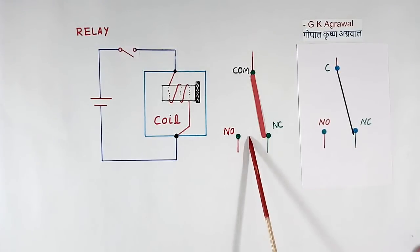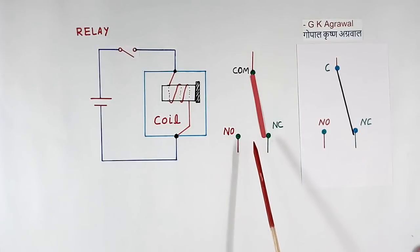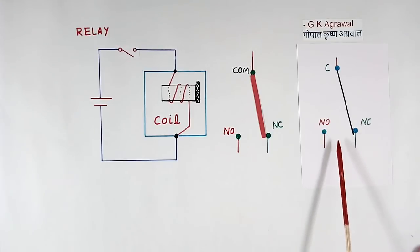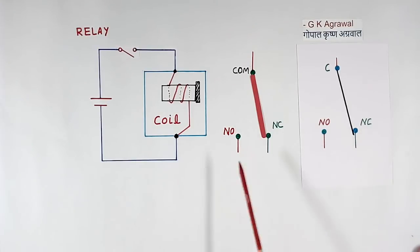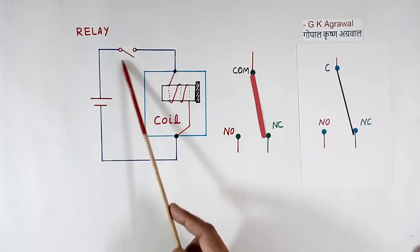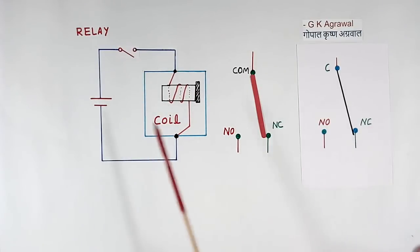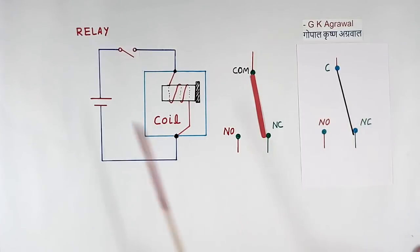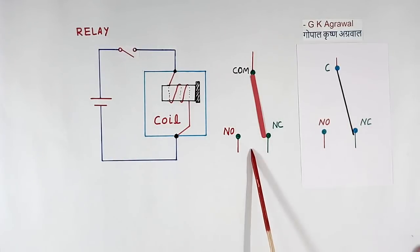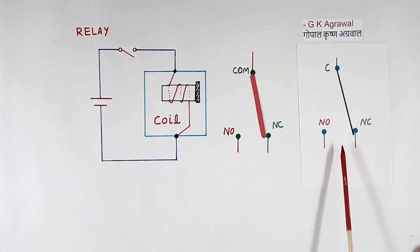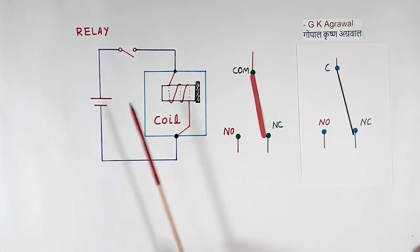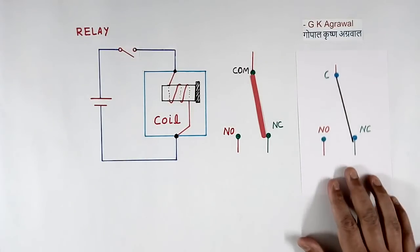Now we have looked at one contact, but in many relays there are two contacts, or even four contacts. So there can be three electrical circuits — one input and two outputs — at three different voltages. Here the input is DC, and the two outputs could be AC or DC. These three circuits are completely isolated from each other.